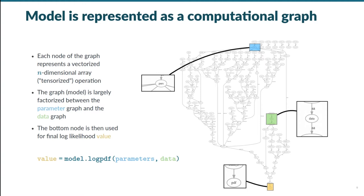If we look at how this model is actually being represented internally, we see that it is a directed computational graph that shows the full formalism of HistFactory. Each node of the graph represents a vectorized n-dimensional array, or as we'll call it tensor, operation. You can see from these color nodes that the data and the model parameters enter at different points and are additionally largely factorized into subgraphs. These parameter and data graphs combine again at the bottom of the graph to be used in the computation of the final log likelihood.